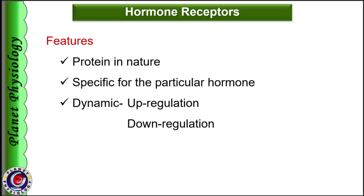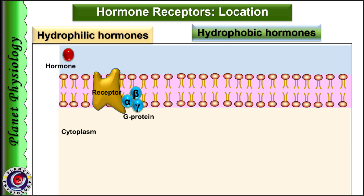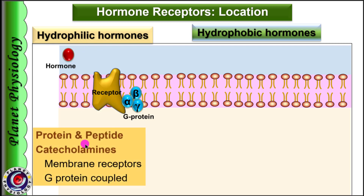Increase in number of receptors in response to hormone is called upregulation, while decrease in number is called downregulation. Their location in the cell membrane depends on the chemical nature of the hormone to which they respond. Receptors for hydrophilic hormones like proteins and peptide hormones as well as for catecholamines are located in the cell membrane.